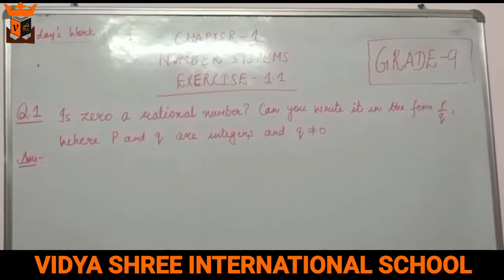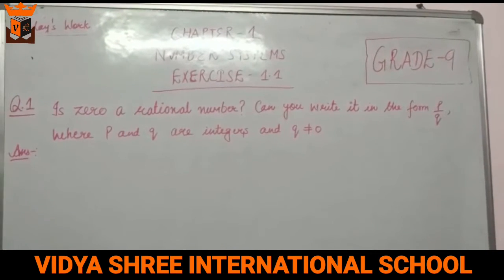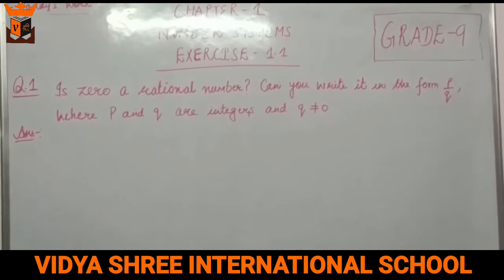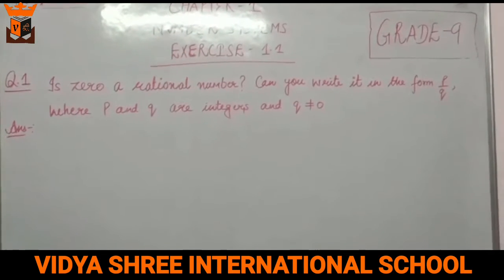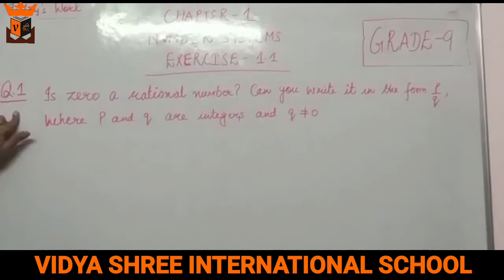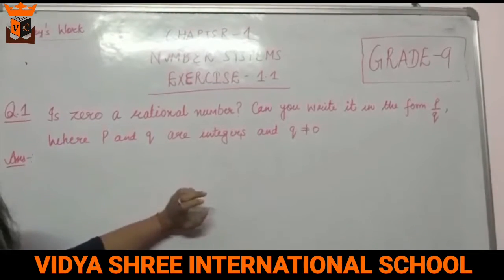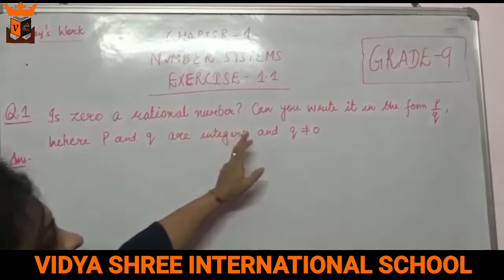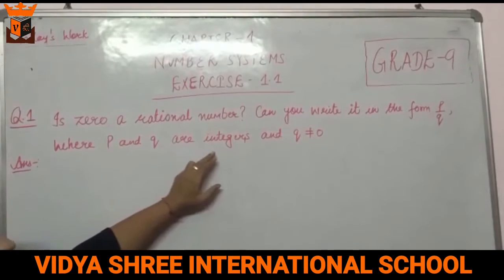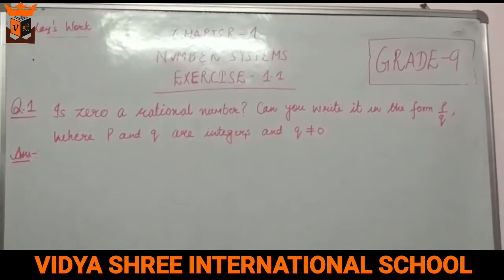Question number one from Exercise 1.1: Is zero a rational number? Can you write it in the form p by q, where p and q are integers and q is not equal to zero? Kya zero ek rational number hai? Kya hum isko p by q form mein likh sakti hai, jahan p aur q integers hon aur q non-zero ho?